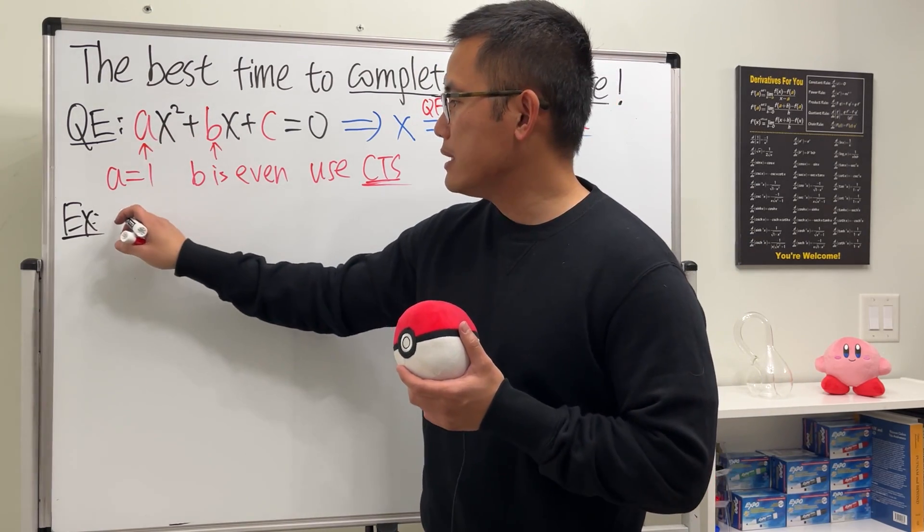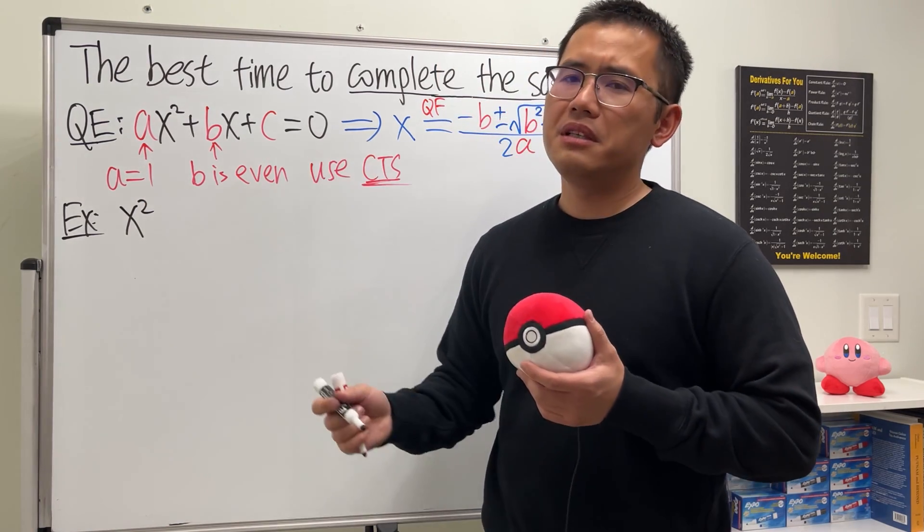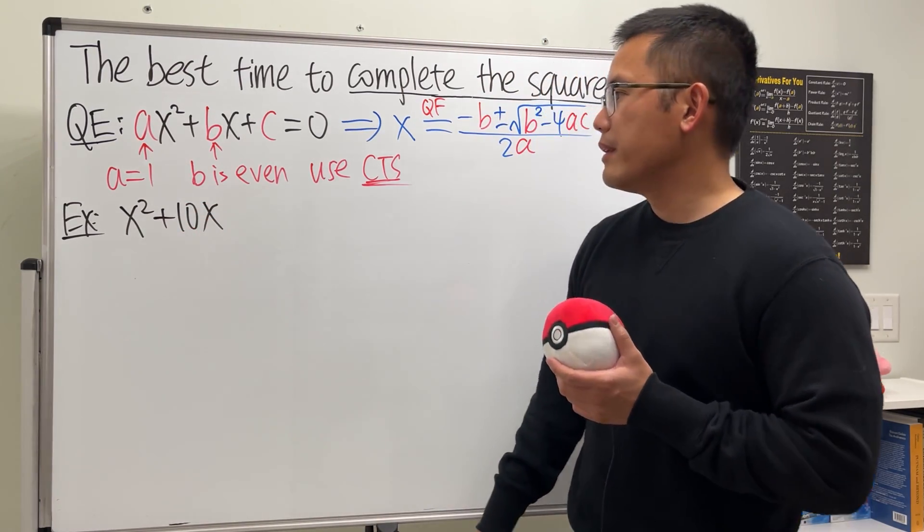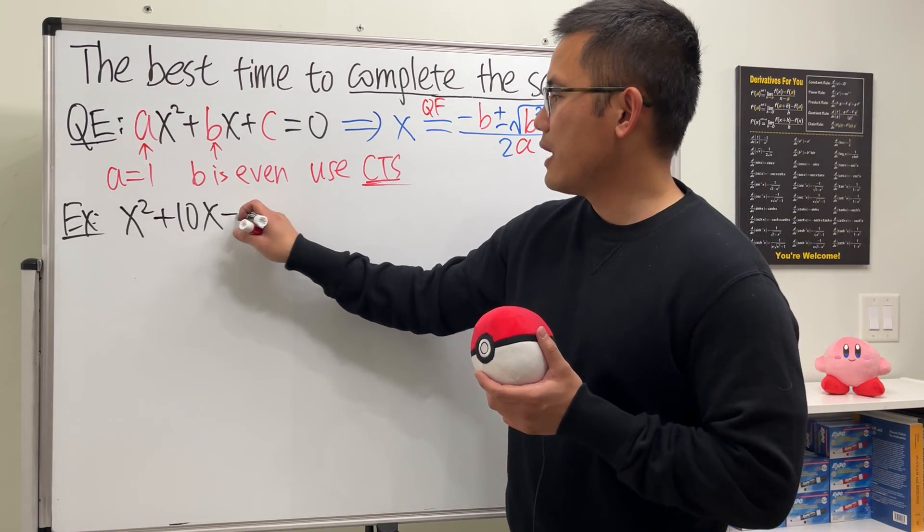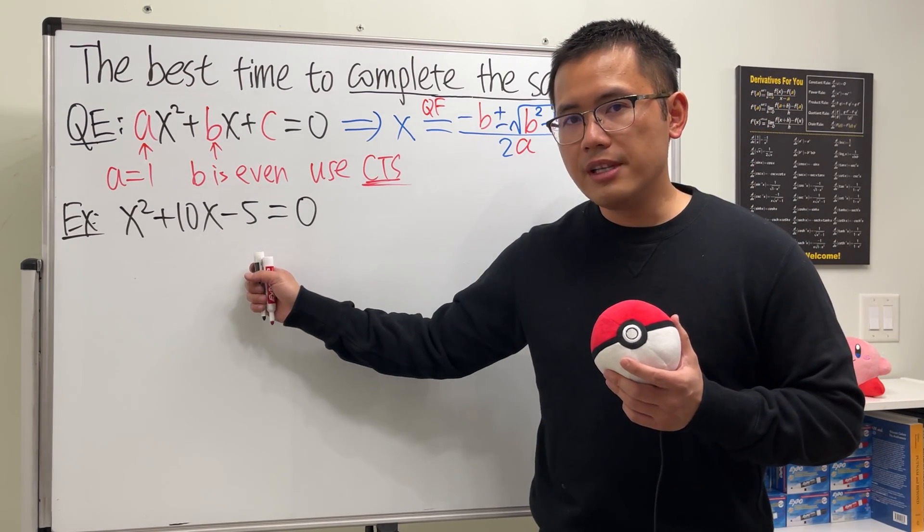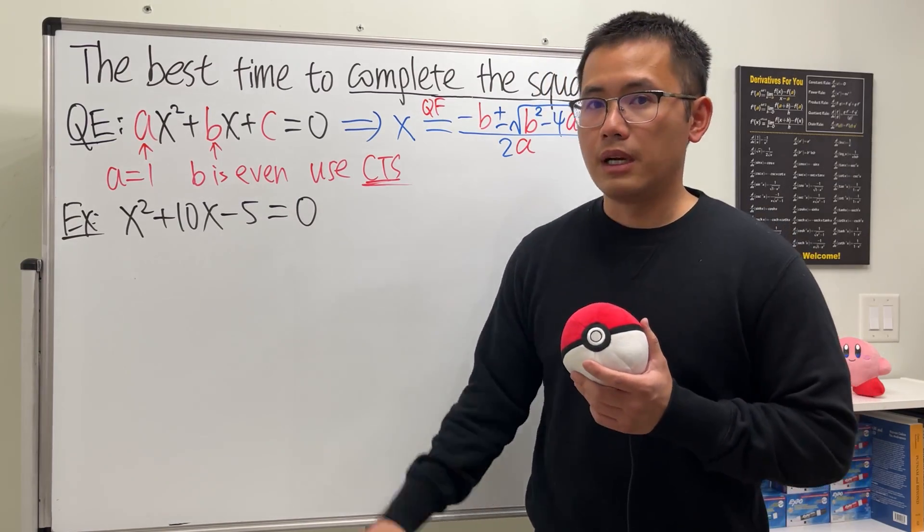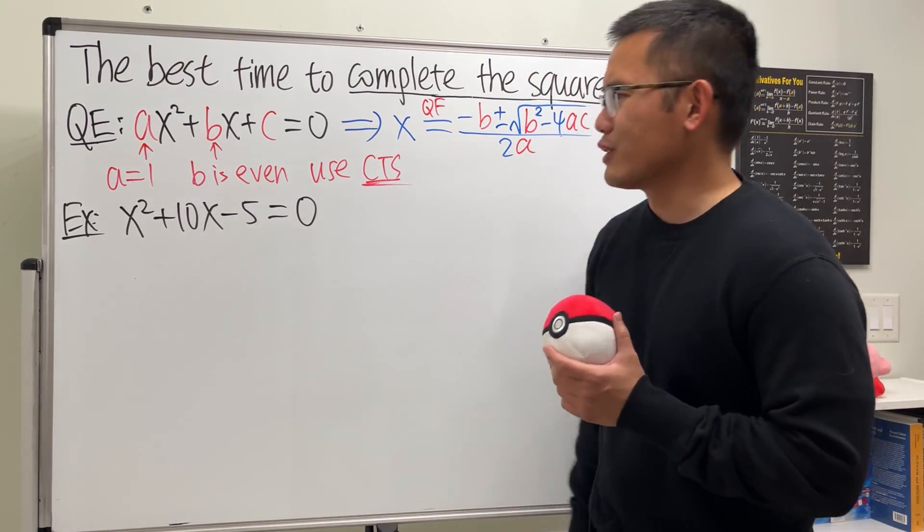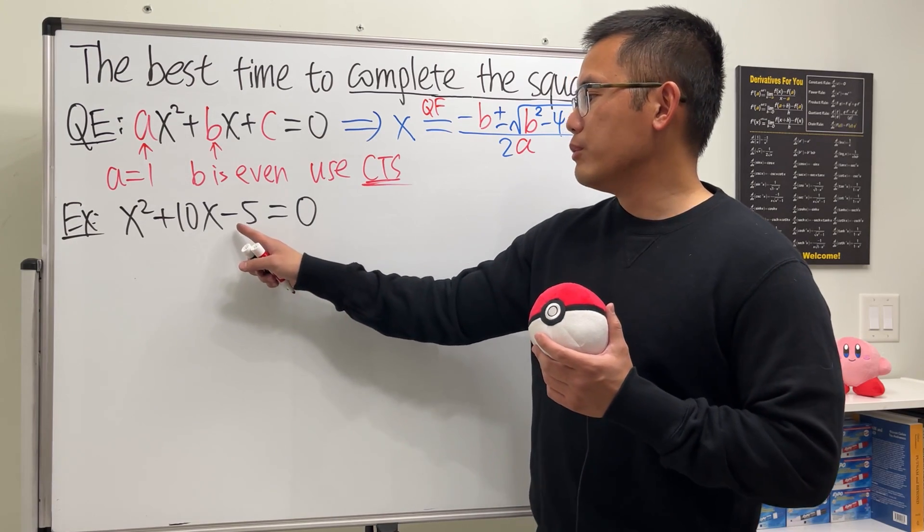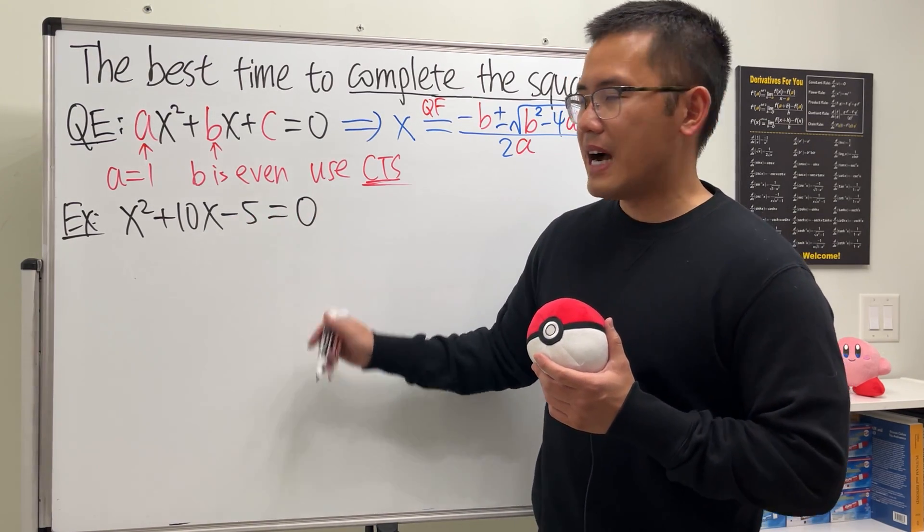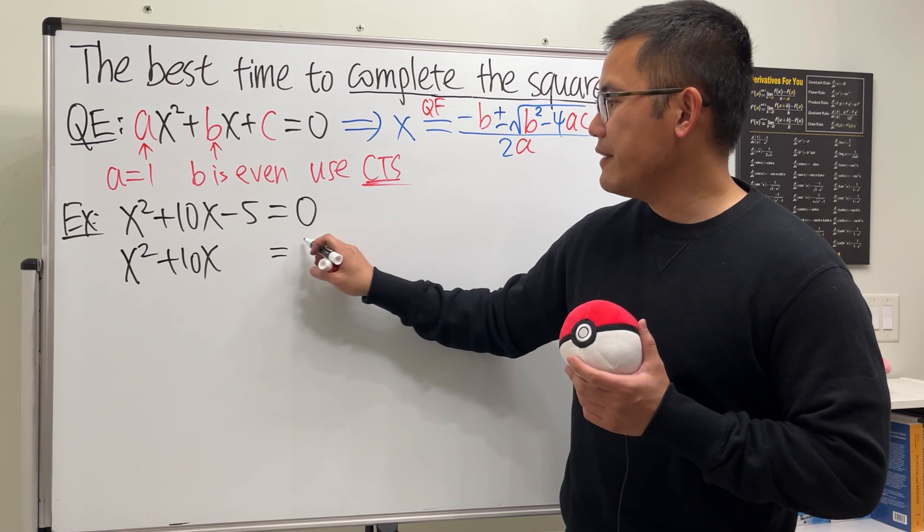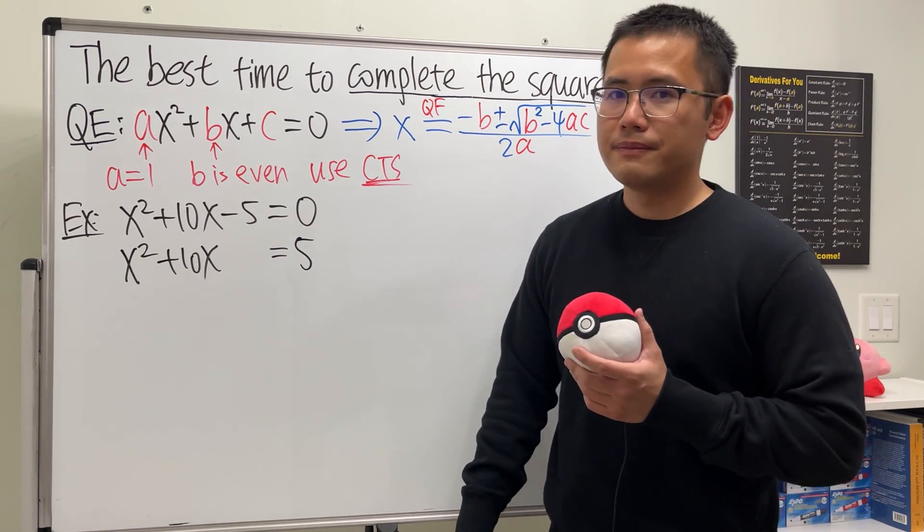Suppose we have a = 1 already. That means we have x². And then let's say b is 10. And by the way, b can be positive or negative, but here I just use positive 10. And let's say C, let's say it's negative 5, because I want to make this not factorable. And of course let's put this equal to 0. Complete the square will beat the quadratic formula for this question. Check this out. This is the first step: we need to have x² + bx on one side. So we have to move the negative 5 to the other side by adding the 5. And we will just get x² + 10x and we will just get positive 5.